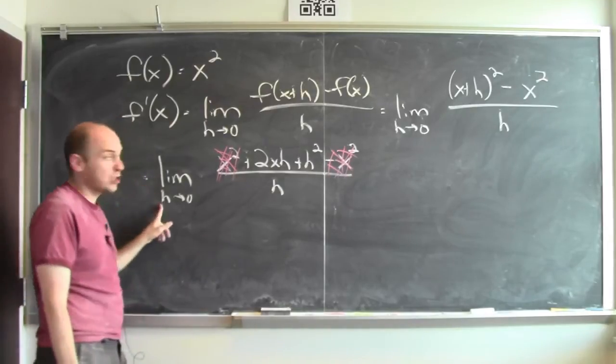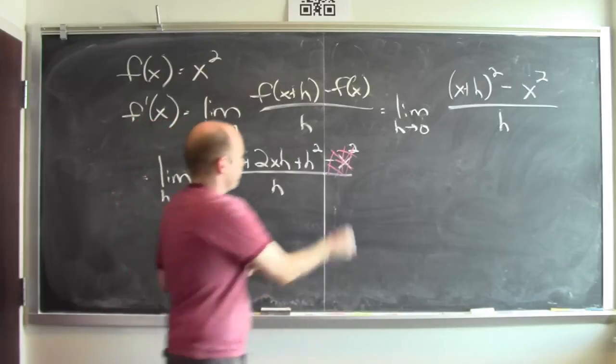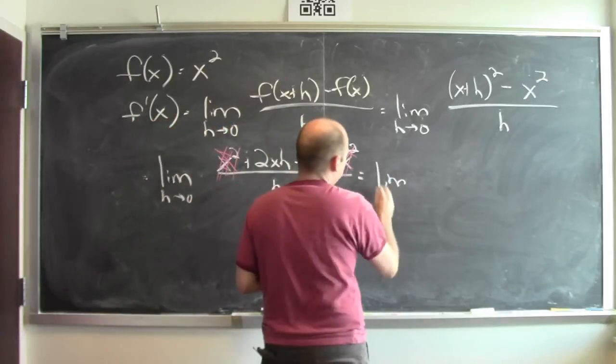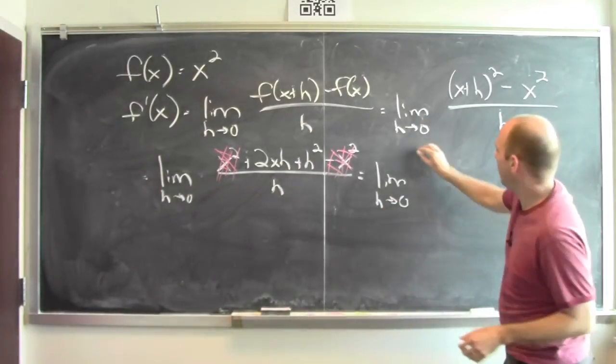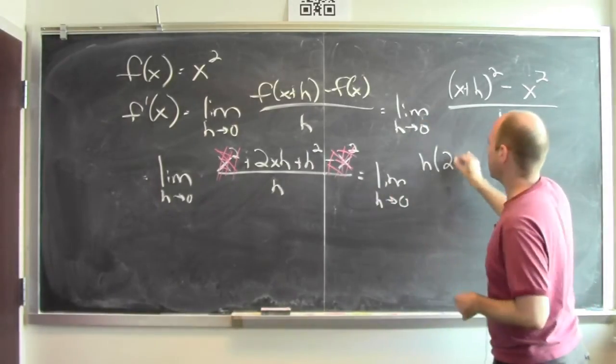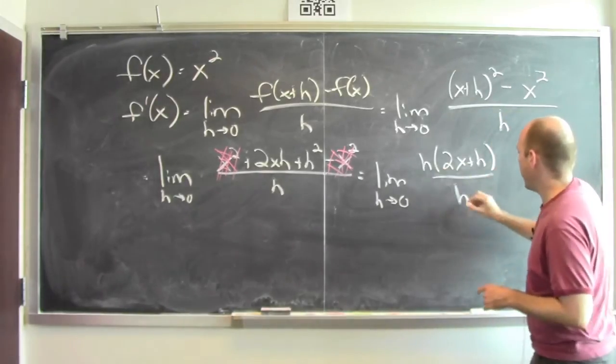I'm taking the limit as h goes to 0, so I'm going to factor out an h from the numerator. So this is the limit as h goes to 0 of h times (2x + h), here I factored out the h from the numerator, divided by h.